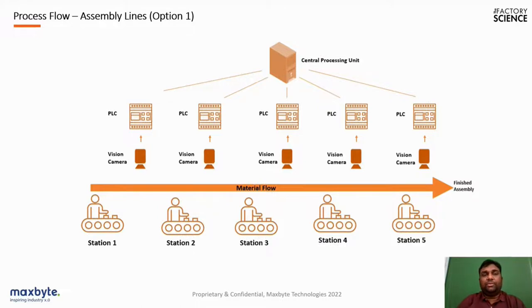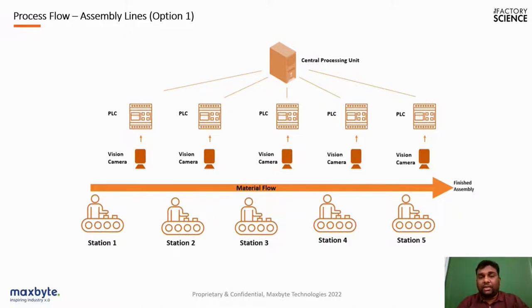The next few slides show how a quality inspection system can be implemented for an assembly line and a machining line. Consider an assembly line with a conveyor and five stations — after each station, a vision camera takes decisions. Once the first station is complete, the part is inspected for certain criteria, and if it passes, it moves to the next station; otherwise it is flagged. The vision inspection camera is installed over the conveyor line, capturing materials in real time at multiple frames per second, delivering results within seconds.